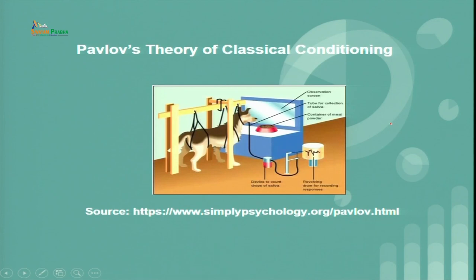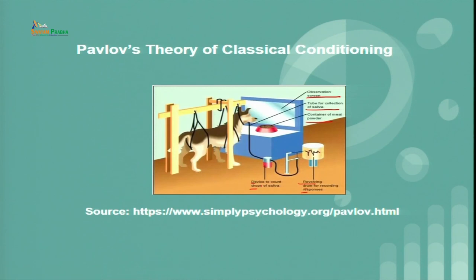We will try to understand the entire scenario proposed by Pavlov through an image. As you see in the slide, there is an image illustrating the important concept introduced by Pavlov. There is a dog, an observation screen, a tube for the collection of saliva, and a container of meat powder. At the bottom there is a revolving drum for recording responses and devices to count drops of saliva. On the first day, the bell rang, but the dog did not notice the ringing. After the bell rang, food was supplied to the dog and the experiment for the day was over.